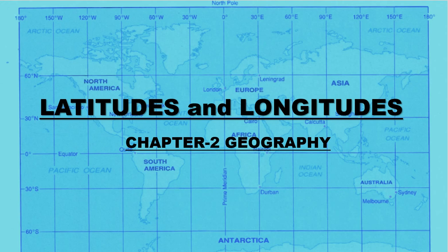In the last video we discussed about the parallels or the lines of latitudes, along with the important parallels: north pole 90° north, arctic circle 66.5° north, tropic of cancer 23.5° north, equator 0° latitude, tropic of capricorn 23.5° south, antarctic circle 66.5° south, and south pole at 90° south. We also discussed how to measure latitudes — the equator divides the earth into the northern hemisphere and the southern hemisphere.